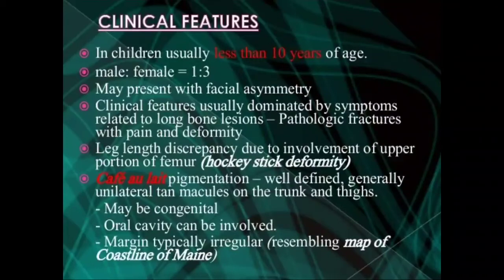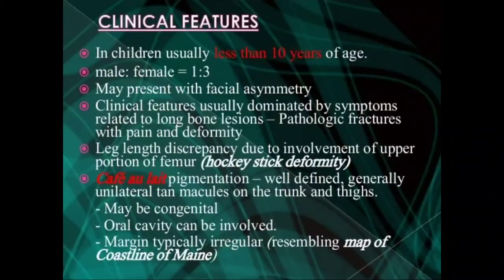In the café au lait spots that are seen, there is pigmentation observed around the trunk and thigh region. It is congenital, and sometimes the patch resembles the map of the coastline of Maine — that is why the border is found to be irregular.